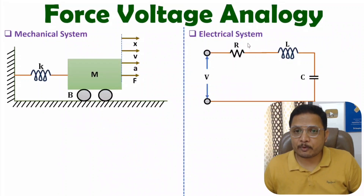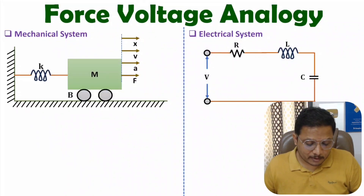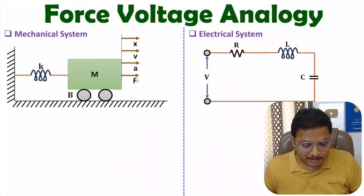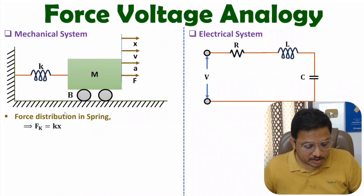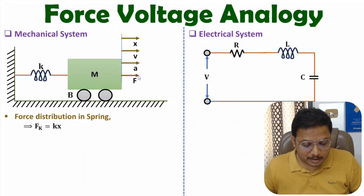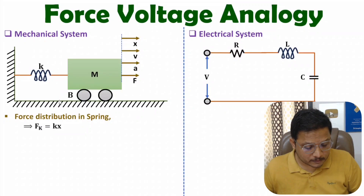To derive the force voltage analogy, first let us analyze the mechanical system. We are applying force f that is distributed into the spring, mass, and damper. Here we have a spring with spring constant k, and because of the force, displacement is x. The restoring force inside the spring will be k times x.